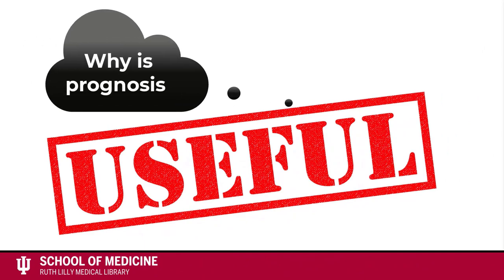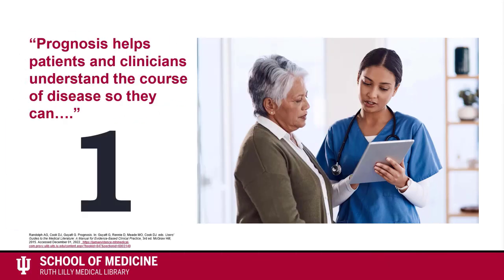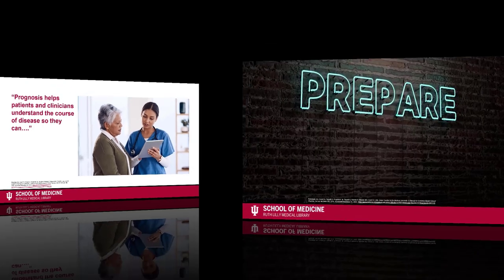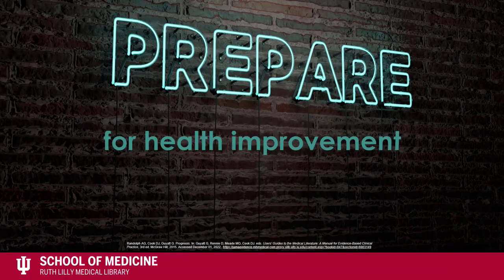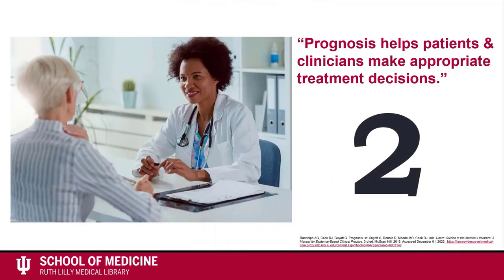So why is understanding prognosis useful? There are two main reasons. Number one, prognosis helps patients and clinicians understand the course of disease so they can prepare for health improvement, bringing reassurance and hope, or prepare for health decline so patients can plan for disability or death. Number two, understanding prognosis helps both patients and clinicians make appropriate treatment decisions.